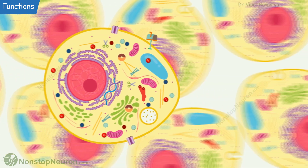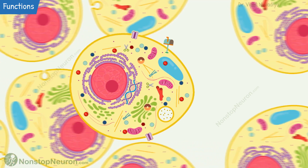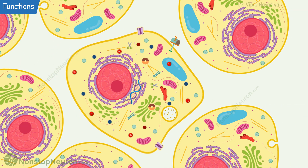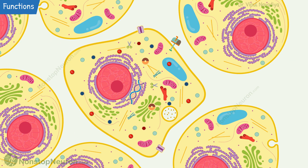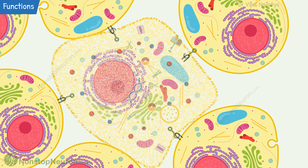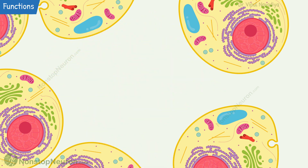The cell may move or change shape with the help of the cytoskeleton. It may connect physically with neighboring cells by junctions. Cells may also adapt in response to the environment. And after happily living its life, the cell dies by the process of apoptosis or necrosis. So this is the overall functional organization of the cell.